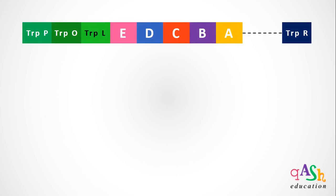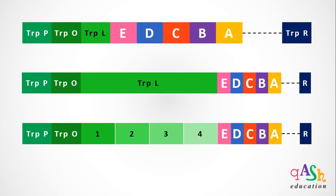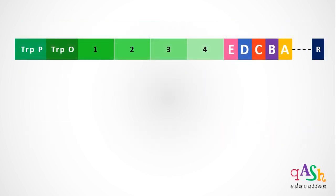This is a representation of the tryptophan operon. Let's zoom in to see the TrpL gene or the leader peptide sequence. The TrpL gene is divided into four segments of DNA: segment 1, 2, 3, and 4. Segment 1 contains a unique UGG-UGG sequence that codes for tryptophan amino acid. Segment 4 contains an attenuation site that is critical for the regulation process.